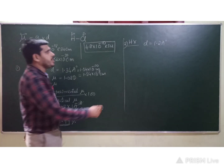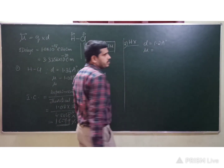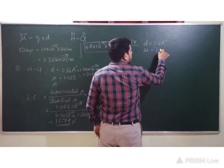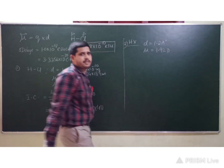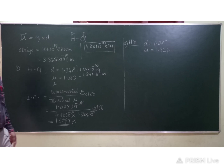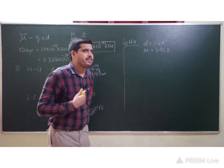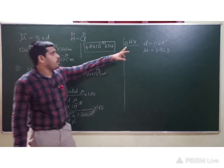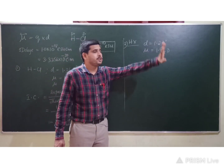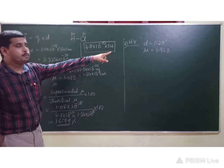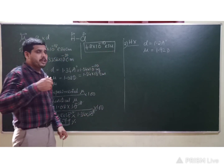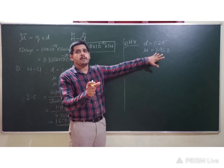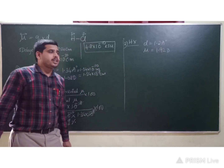The bond length is 1.2 Å and the experimental dipole moment is 1.92 Debye. Note that in the exam, the question won't specifically say 'experimental dipole moment' — they'll just give the dipole moment value — but you should remember that any given dipole moment is the experimental value. We need to calculate the percentage of ionic character.